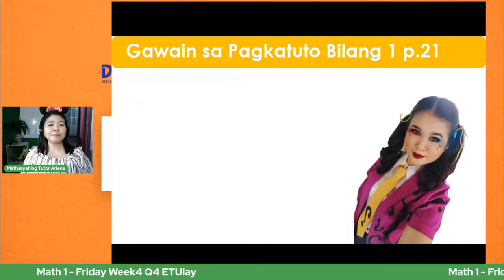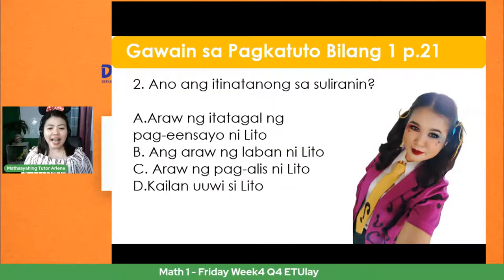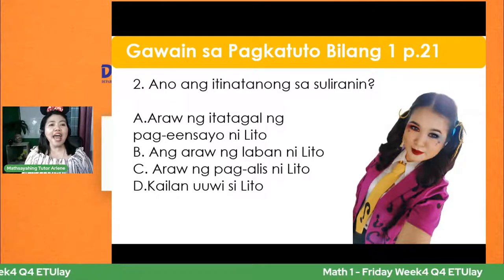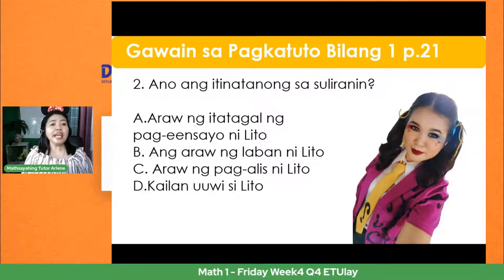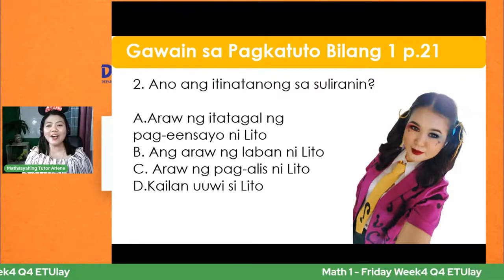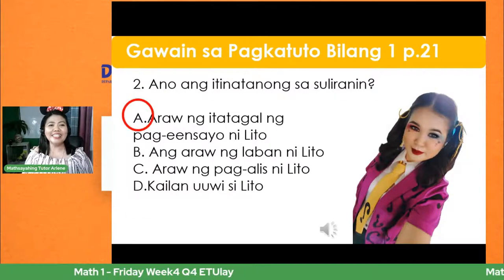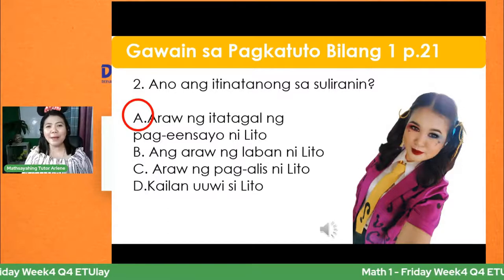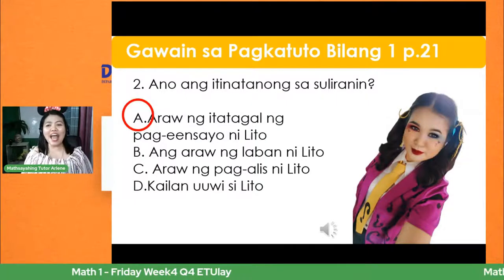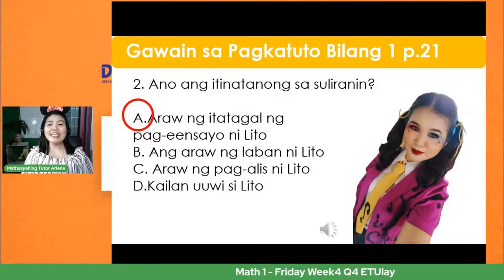Number two: Ano ang tinatanong sa suliranin? A - araw ng itatagal ng pag-eensayo ni Lito, B - araw ng laban ni Lito, C - araw ng pag-alis ni Lito, D - kailan uuwi si Lito. Ang tamang sagot ay letrang A — araw ng itatagal ng pag-eensayo. Number three: Ano ang operasyong gagamitin? A - pagbabawas, B - pagdaragdag, C - pagpaparami, D - paghati. Ang tamang sagot ay letrang A: pagbabawas.